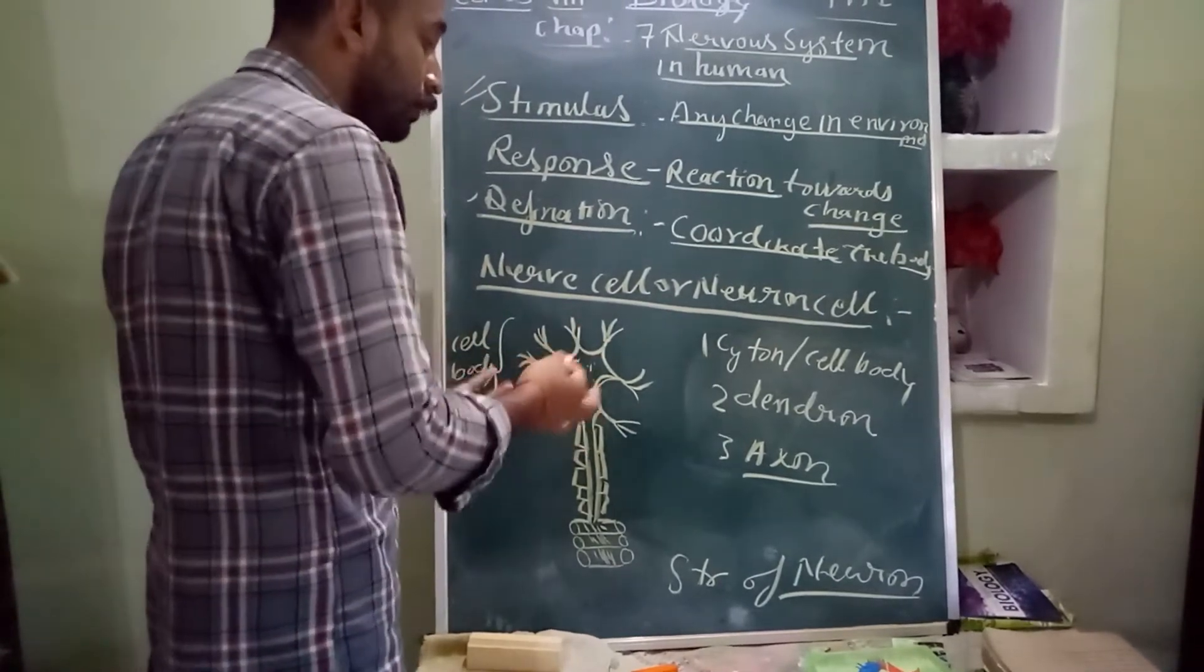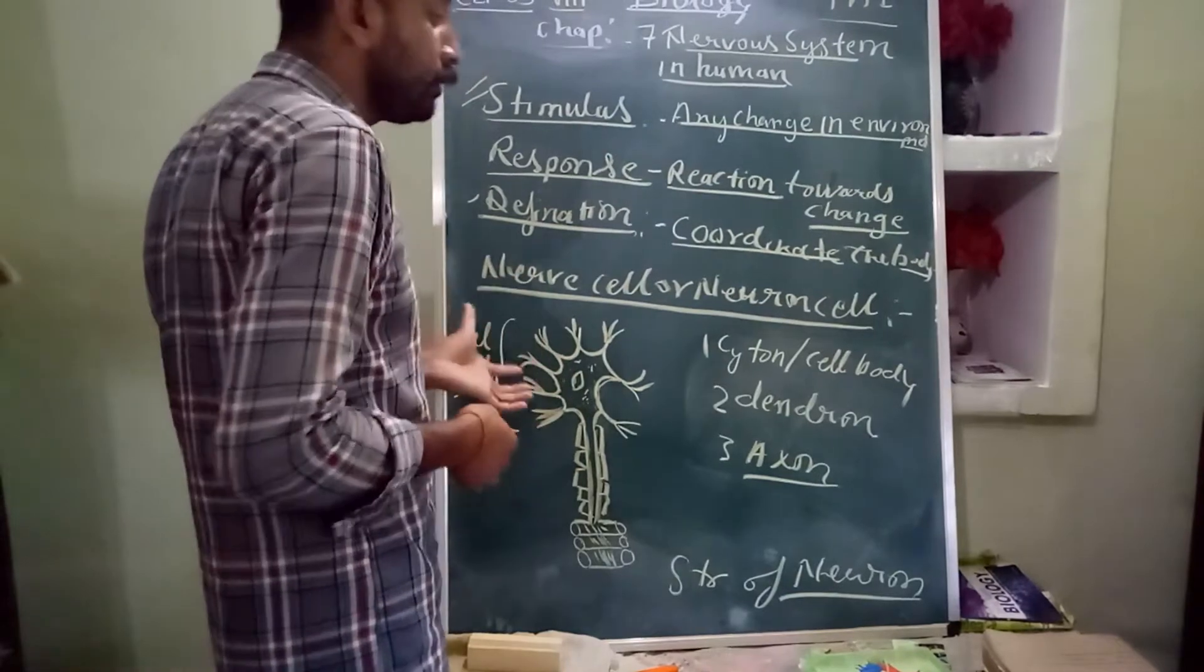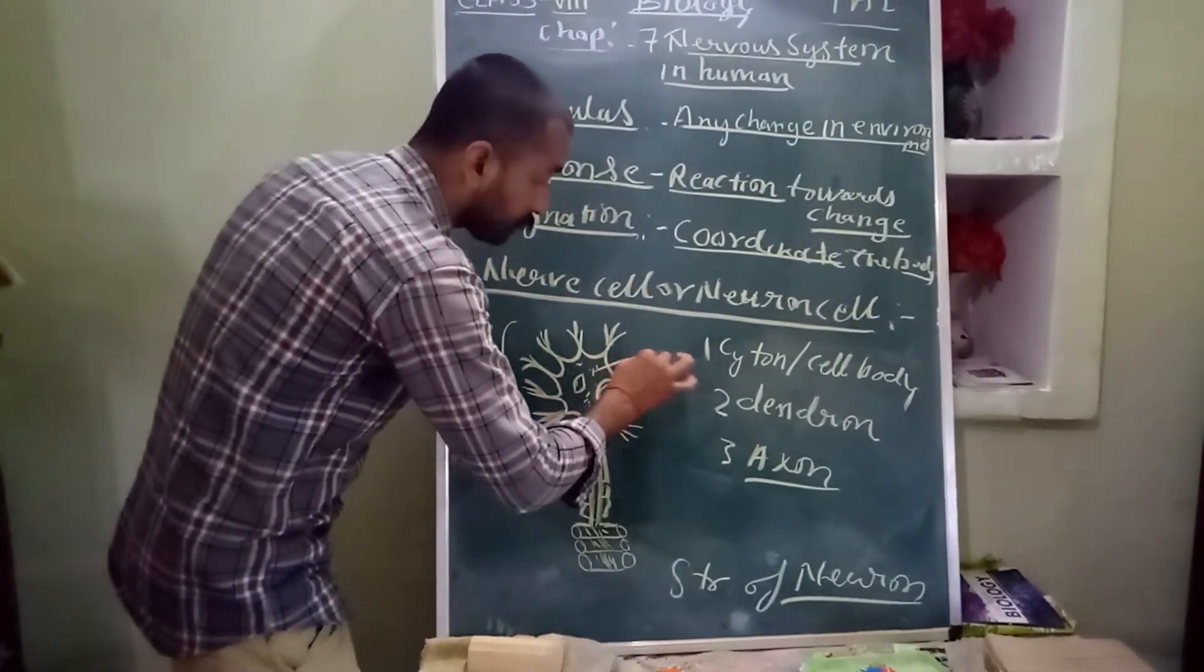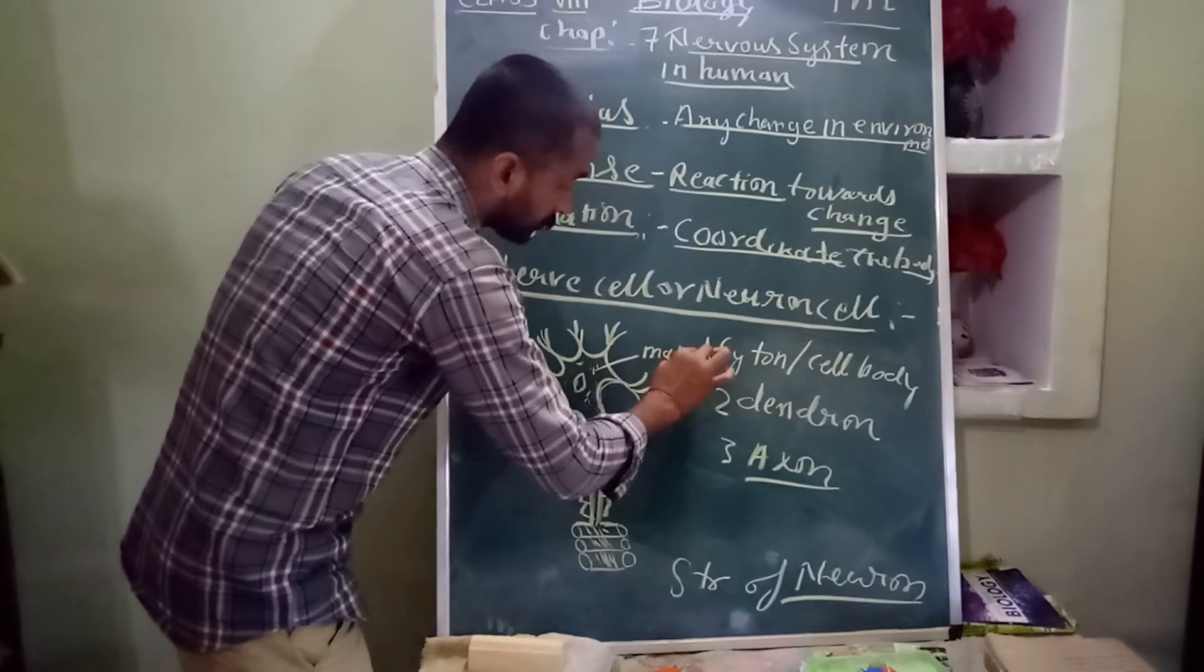Neuroplasm because neuron cell contains this plasma, so neuroplasm. Cell body or sometimes also called matrix.